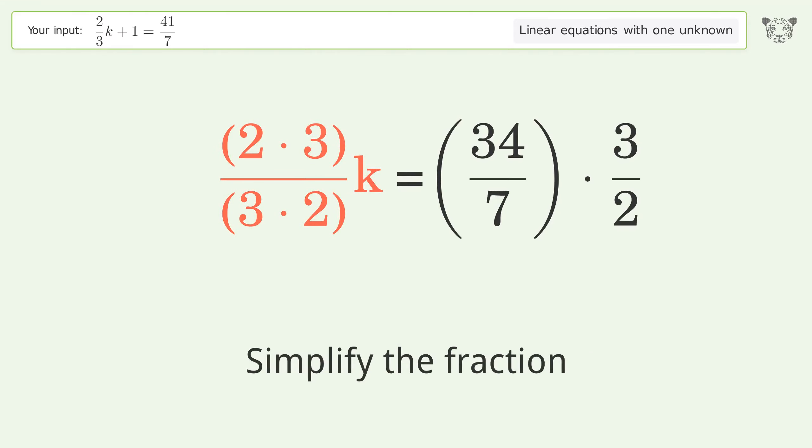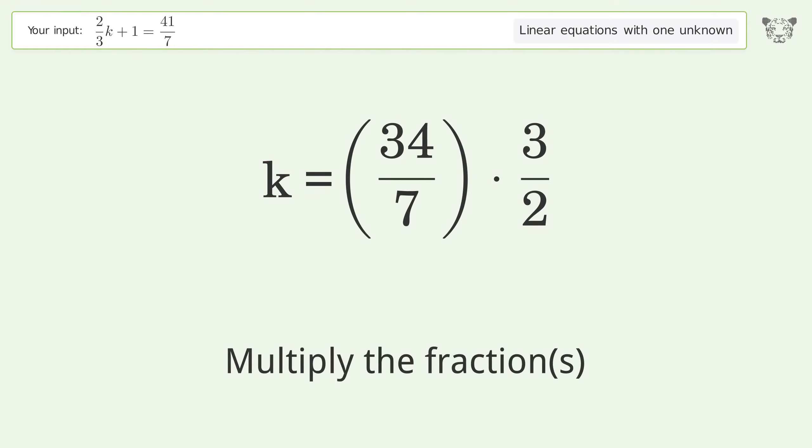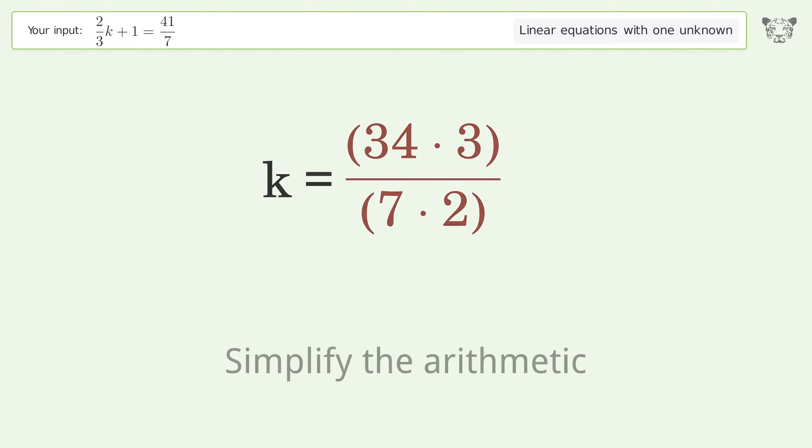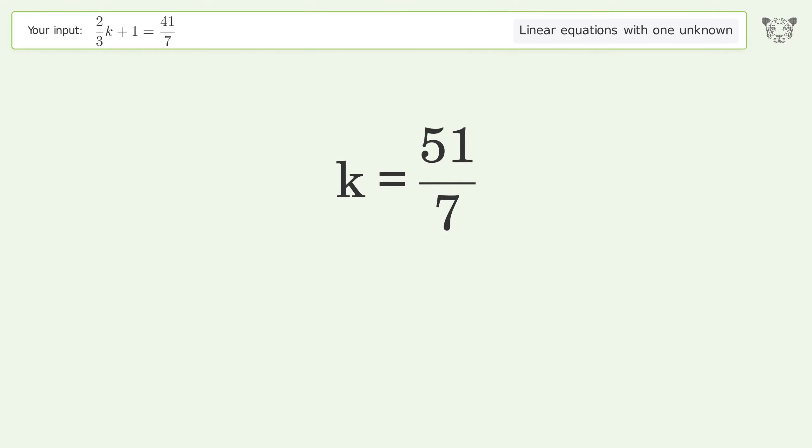Simplify the fraction. Multiply the fractions. Simplify the arithmetic. And so the final result is k equals 51 over 7.